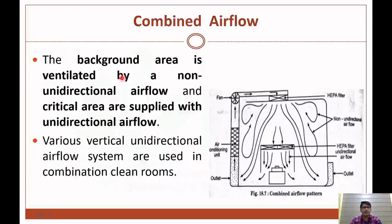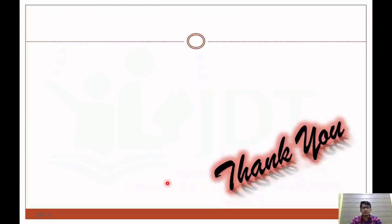In combined air flow, the background area is ventilated by non-unidirectional air flow and the critical area is supplied with unidirectional air flow. Various vertical unidirectional air flow systems are used in combination in clean rooms. That is all about environmental control in the aseptic area — how we control contaminating microorganisms and particulate matter in air by using laminar air flow units. Thank you for watching this video.